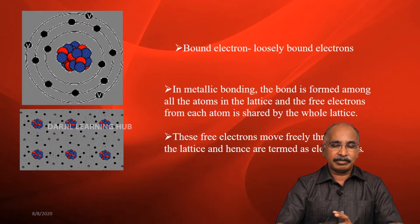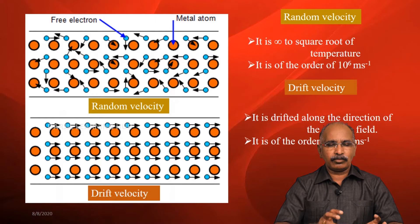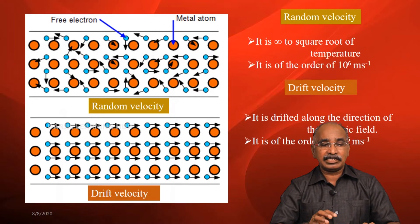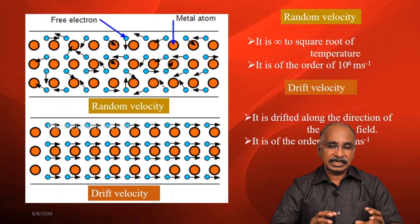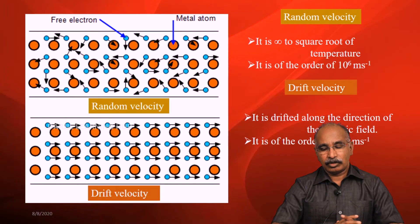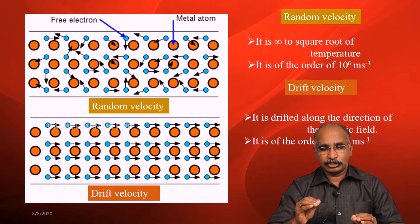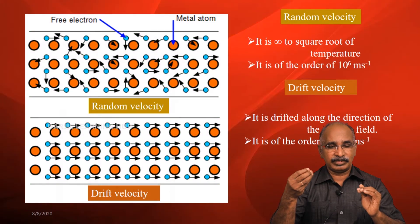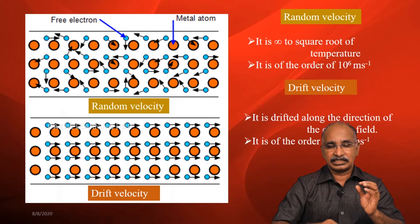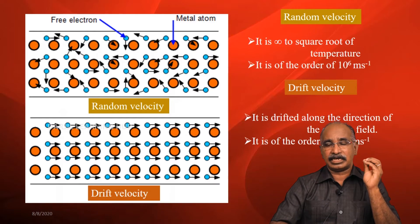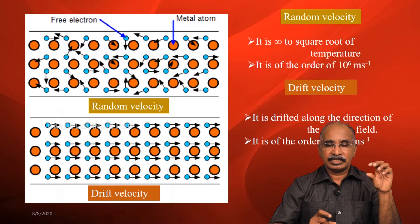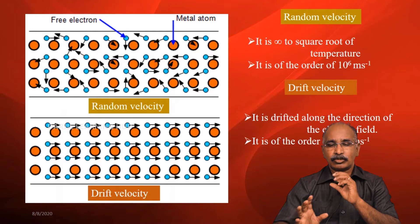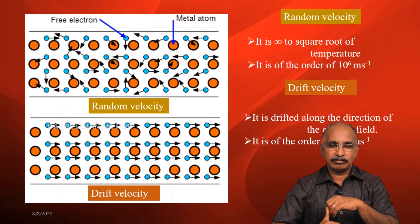These free electrons are moving in random directions with random velocities. The average velocity is called the random velocity of the electrons. This random velocity depends upon the temperature of the body — if we raise the temperature of the material, the electrons gain more energy and their velocity increases. The random velocity is directly proportional to the square root of the temperature, and it is of the order of 10 to the power of 6 meters per second.